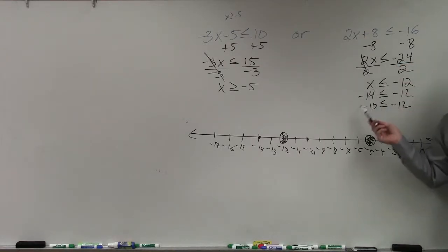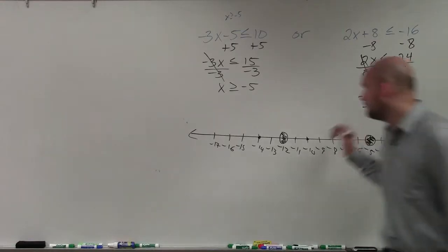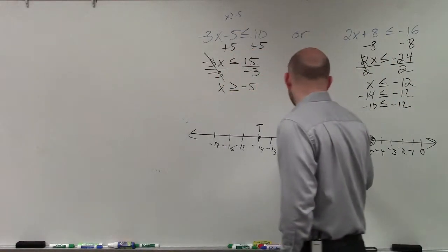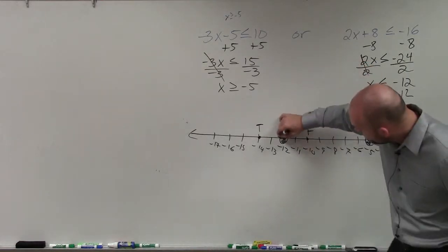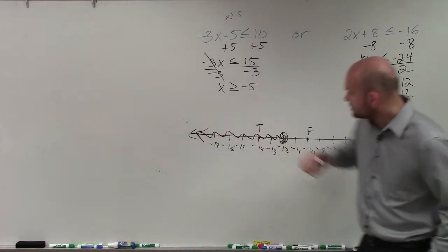If you owe somebody $14, you have less money than if you owed them $12. Right? If you owed them $10, you do not have less money than if you owed them 12. So 14 is true. So 14 is true. 10 is false. So therefore, my graph is going to go to the left.